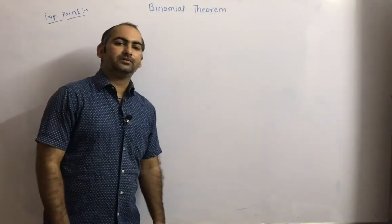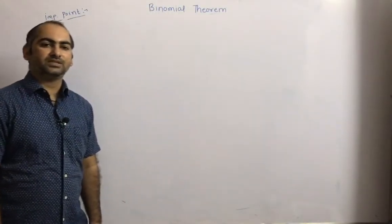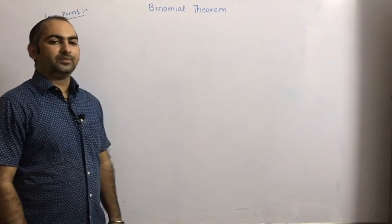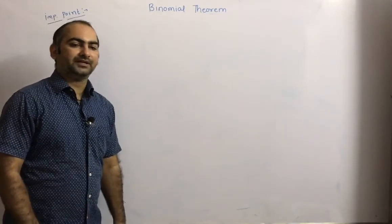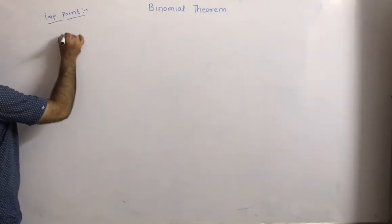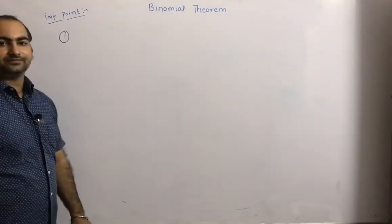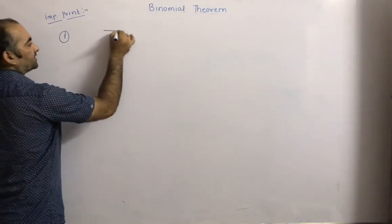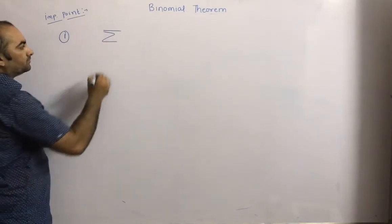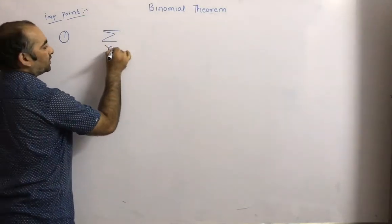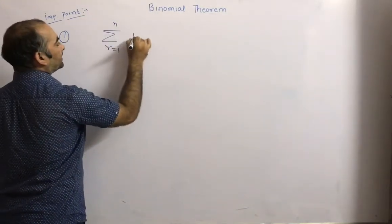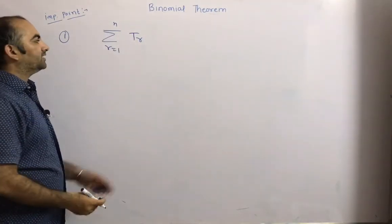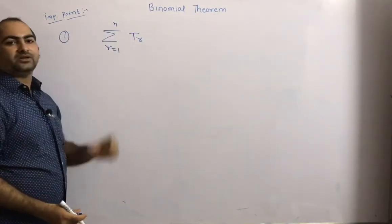Today we will discuss problems based on double sigma when i and j both are dependent — that is, how to find out symmetrical series. For example, if I give one series sigma r equal to 1 to n, t_r, we want to check whether this series is symmetric or not.